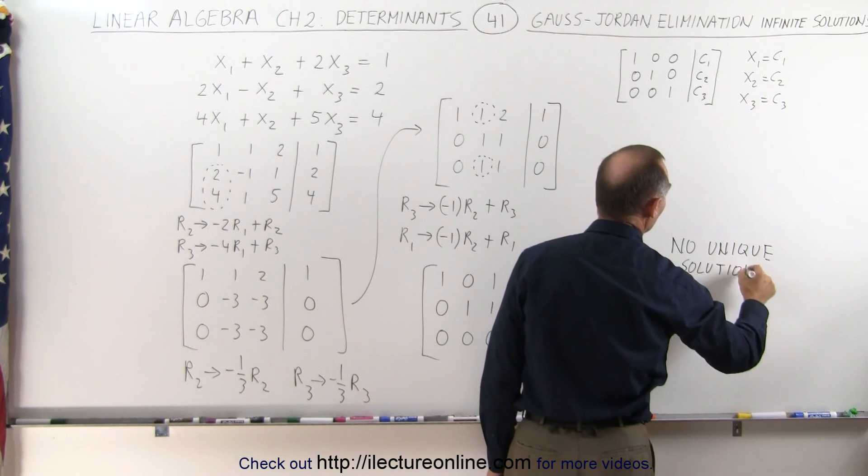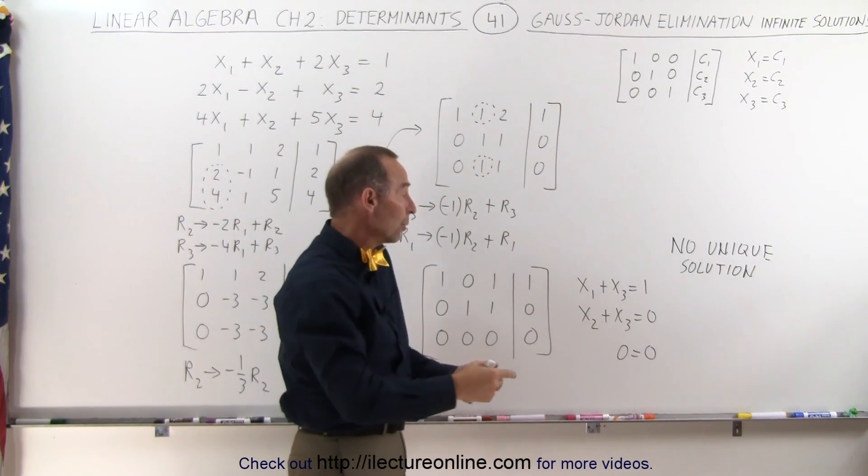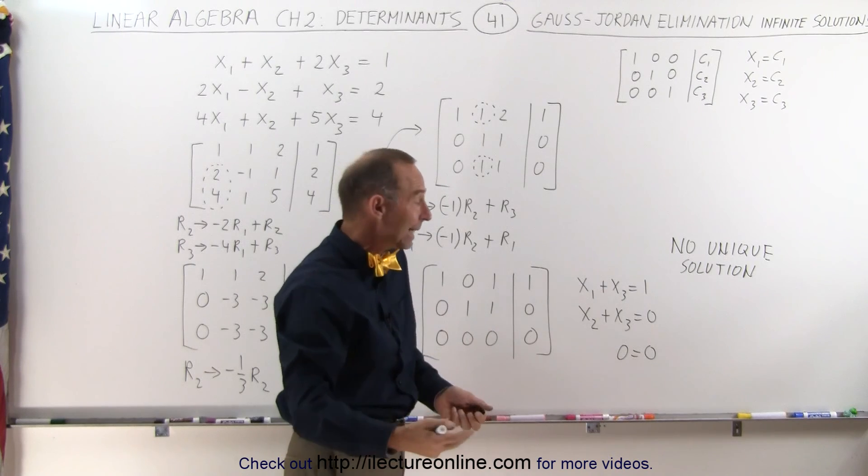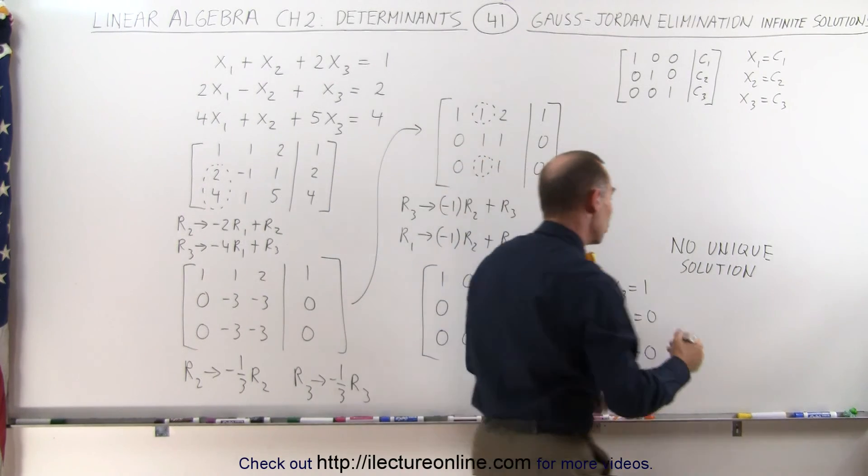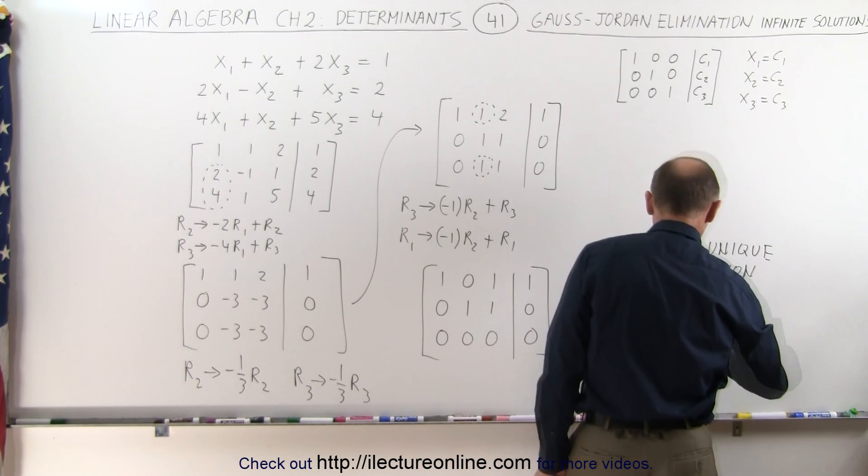In other words, there's an infinite number of solutions, because for every value for x3, we can come up with a solution for x1 and x2, but x3 can be anything, so therefore, there's no unique solution. There's what we call an infinite number of solutions.